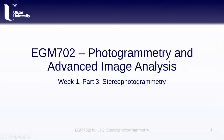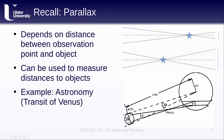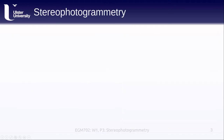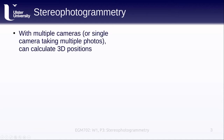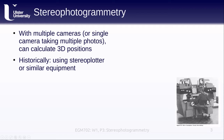Welcome back to EGM 702 Photogrammetry and Advanced Image Analysis. This is week one, part three: stereophotogrammetry. In the last lesson we talked about parallax and how we can use that principle to estimate or calculate the distance between the observation point and the object being observed. That is more or less the basis of stereophotogrammetry, where we use multiple cameras or a single camera that takes multiple photos to calculate 3D positions.